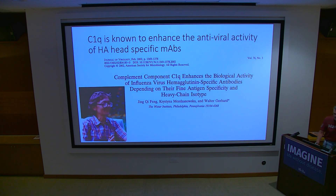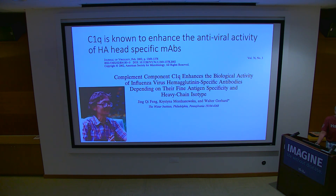Walter had a nice paper in the Journal of Virology about 20 years ago showing a major enhancement of antibody neutralization activity — blocking attachment — particularly as the antibody epitope moved down the HA spike. Antibodies right near the receptor binding site showed less enhancement, but moving down the spike to the CB site they worked much better.